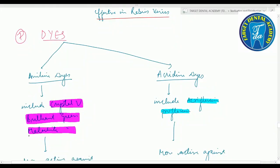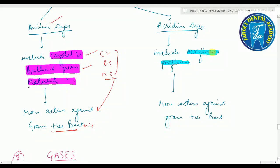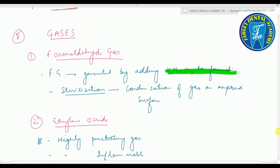Dyes include two types: aniline dyes and acridine dyes. Aniline dyes include crystal violet, brilliant green, and malachite green — these are more active against gram-positive bacteria. Acridine dyes include acriflavine and proflavine — also more active against gram-positive bacteria than gram-negative bacteria.